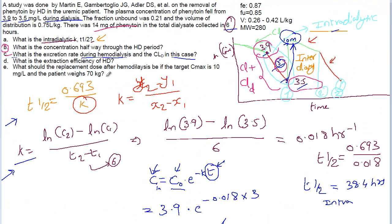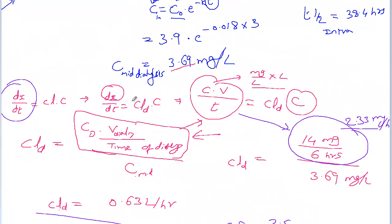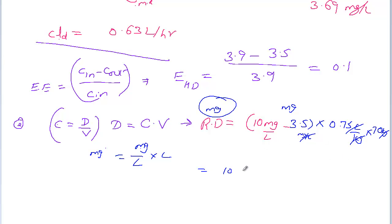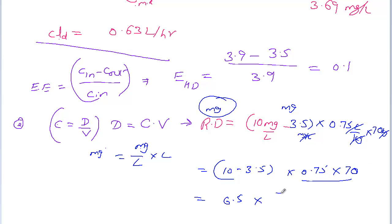The volume of distribution is 0.75 L/kg, and the patient weighs 70 kg, so Vd = 0.75 × 70 = 52.5 liters. Therefore, the replacement dose = (10 − 3.5) × 0.75 × 70 = 6.5 × 52.5 = 341.25 mg.